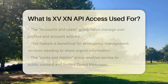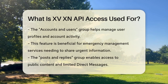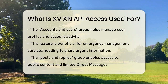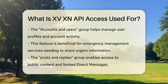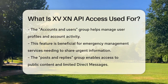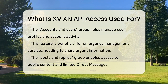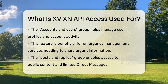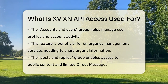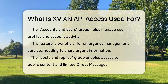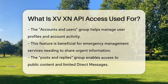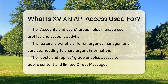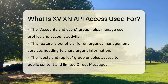This makes it easier for businesses to engage with their customers directly through X. X's API is divided into several key groups. The Accounts and Users group lets developers manage user profiles, mute or block users, and request information about an authorized account's activity. This is particularly useful for services like emergency management departments that need to disseminate critical information quickly.